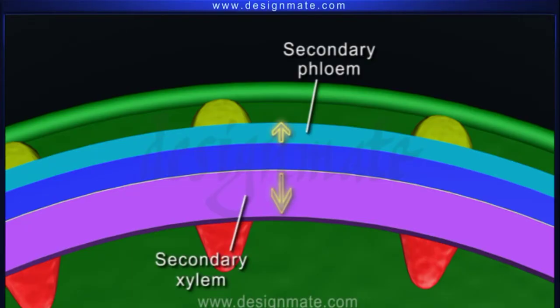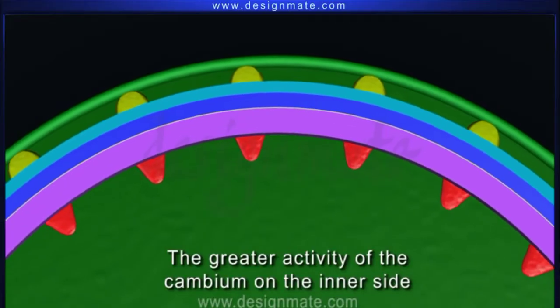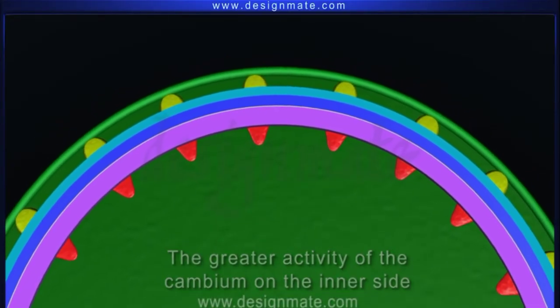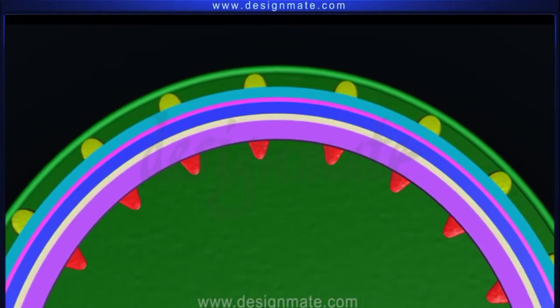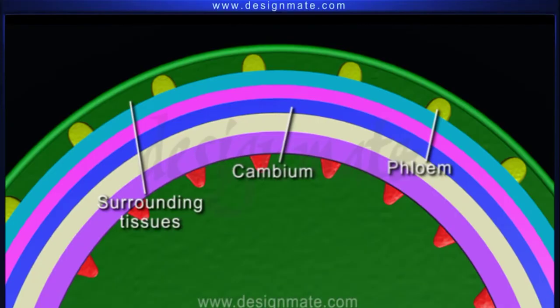The xylem increases more rapidly in bulk than phloem due to a greater activity of cambium on the inner side. The cambium, phloem, and surrounding tissues are pushed towards the periphery.